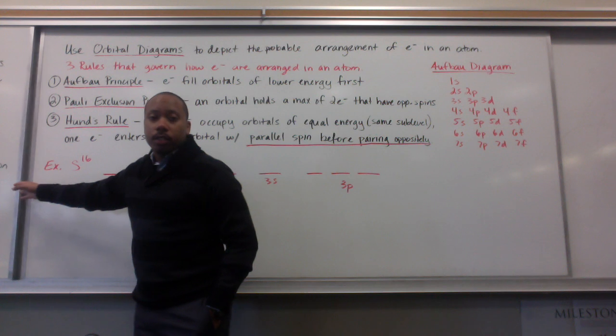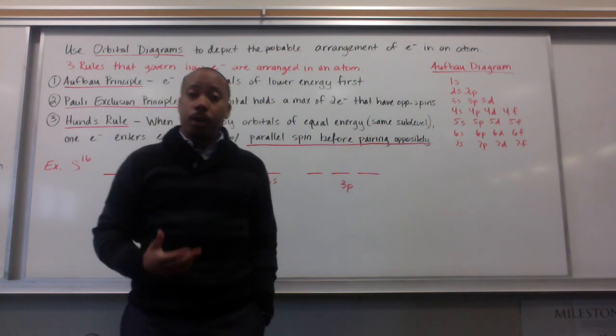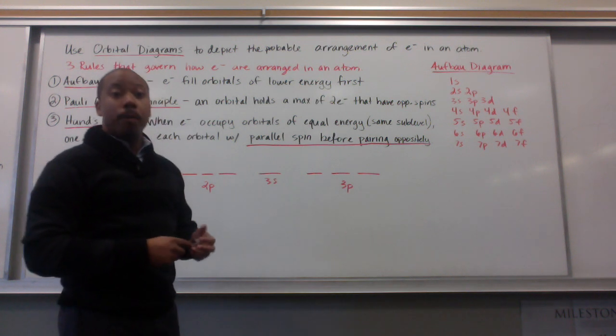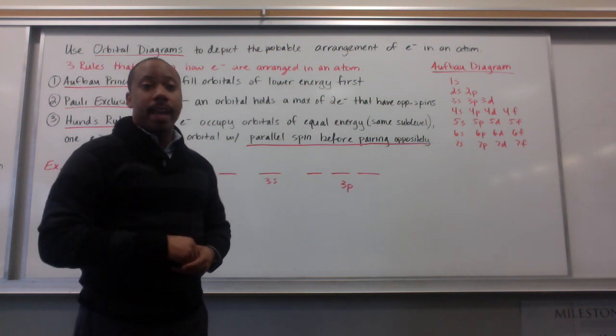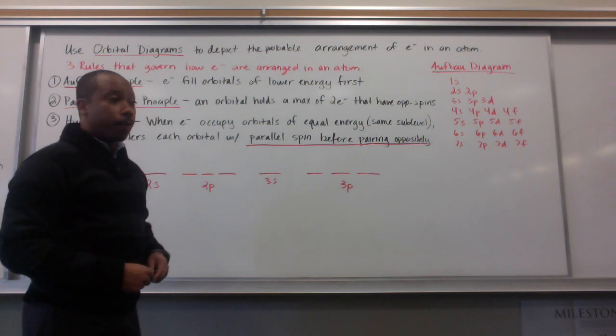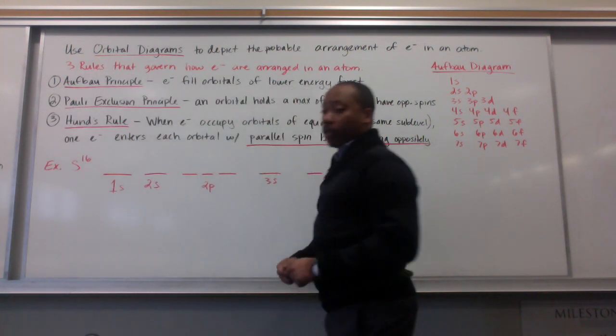Now, we use orbital diagrams to depict the arrangement or the probable arrangement of electrons in an atom. There are three rules that will govern how we do this. The first rule is called the Aufbau Principle.